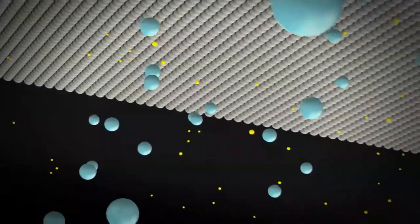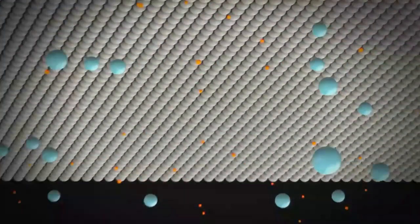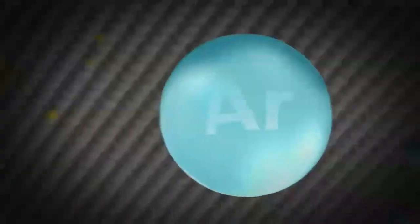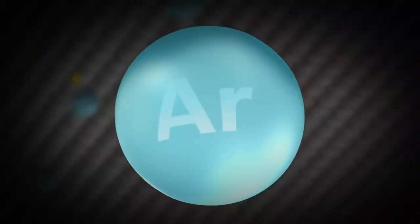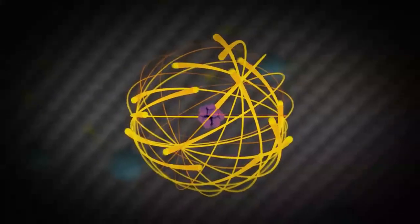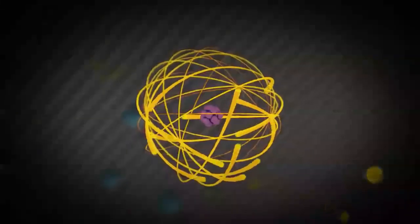The plasma consists of argon atoms, positively charged argon ions, and free electrons. The positively charged argon ions are continuously generated by electrons hitting the argon atoms.